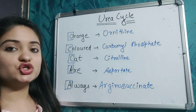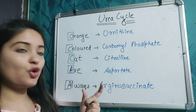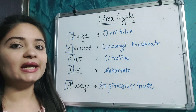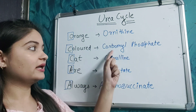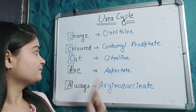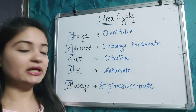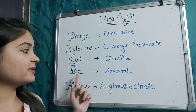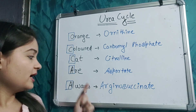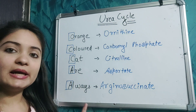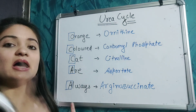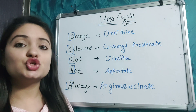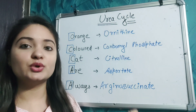The first word is 'Orange' — the first letter O represents Ornithine. 'Color' — the first letter C correlates to Carbamoyl phosphate. 'Cats' — C stands for Citrulline. The next word gives us the letter R, which represents Aspartate. 'Always' — the first letter A correlates to Arginosuccinate, which is an intermediate in the urea cycle.